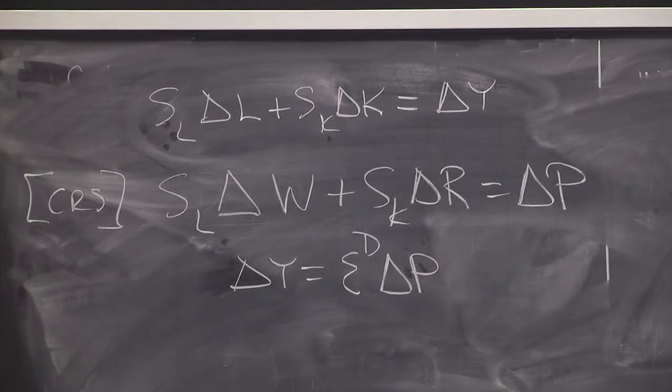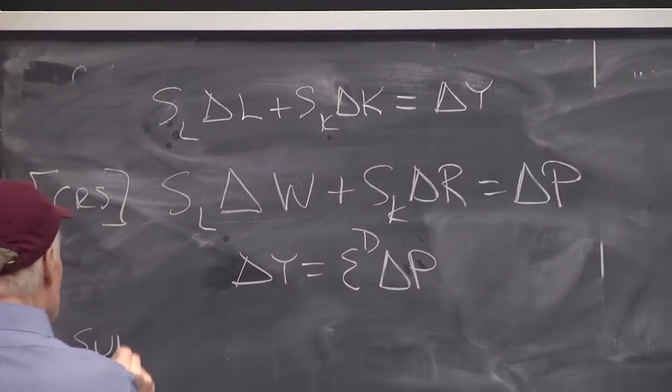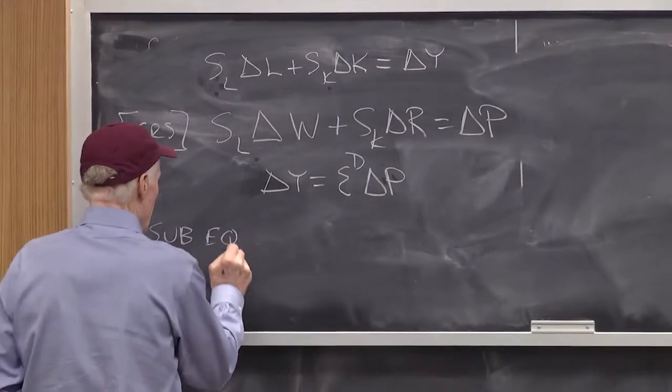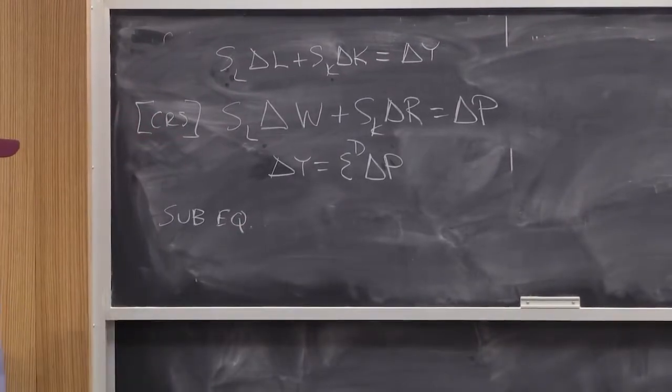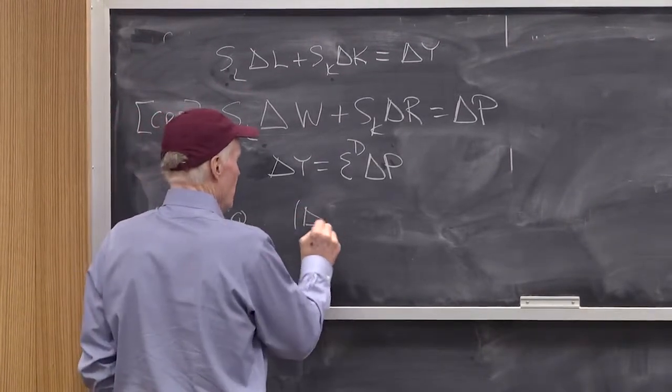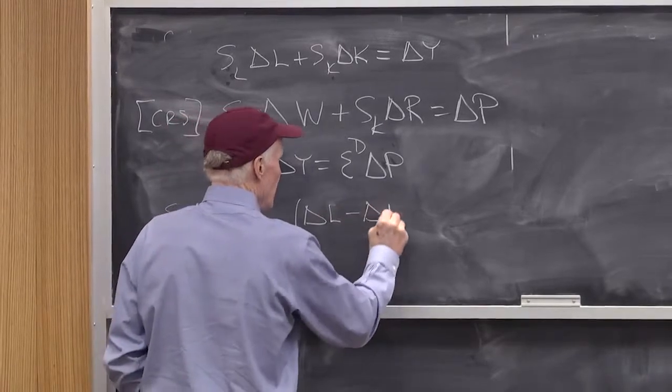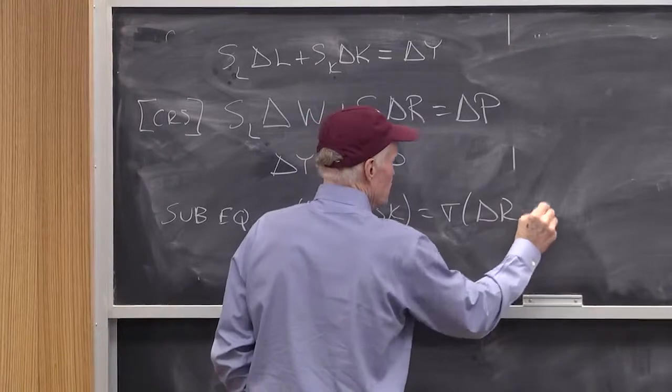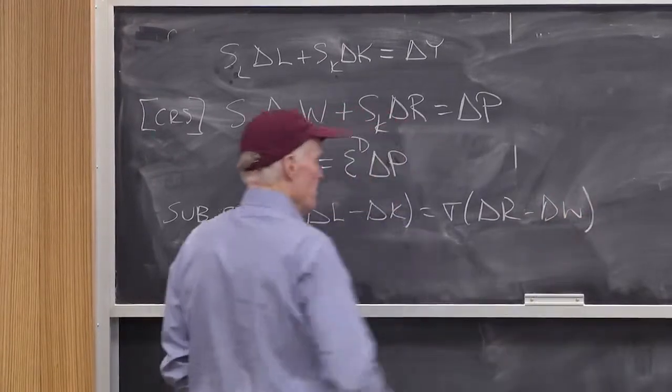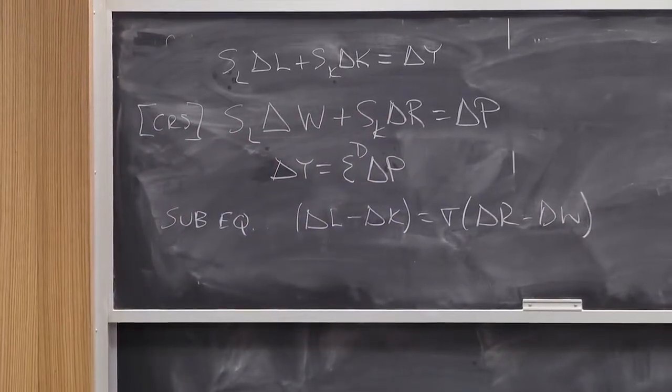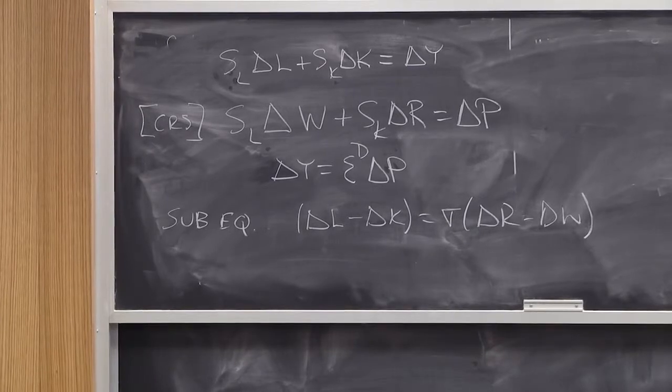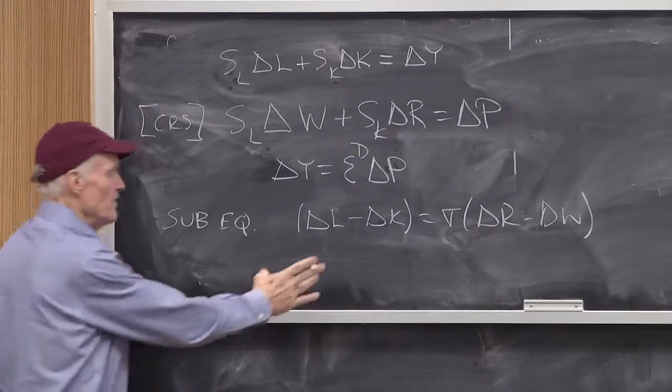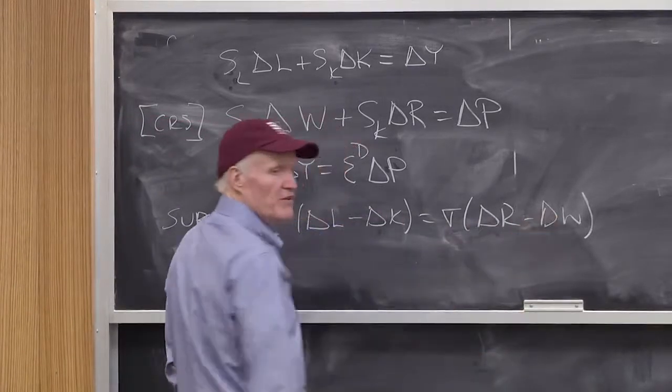And then, finally, we had the substitution equation. And for the substitution equation, we said it was delta L minus delta K equals sigma delta R minus delta W. Which works in the two-factor case, because with two factors, relative quantities are just a function of relative prices.